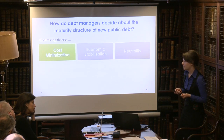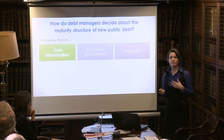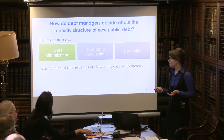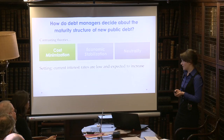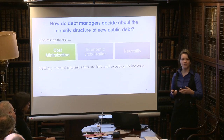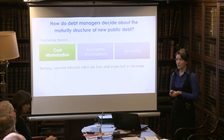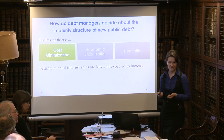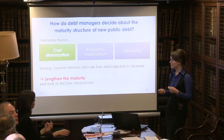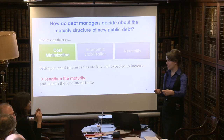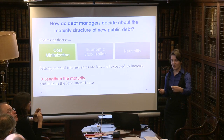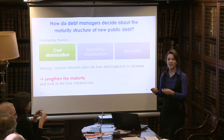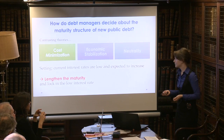Cost minimization — what is that? Well, whatever you borrow, you want it to be as cheap as possible. So in a current setting where you have low interest rates but they may be expected to increase in five to ten years' time, what you'd want to do is intuitively lock in the current low interest rates. So you would lengthen your maturity structure, because otherwise if you issue short term, you're going to have to refinance again and again at higher rates — and you don't want to do that. Quite intuitive.